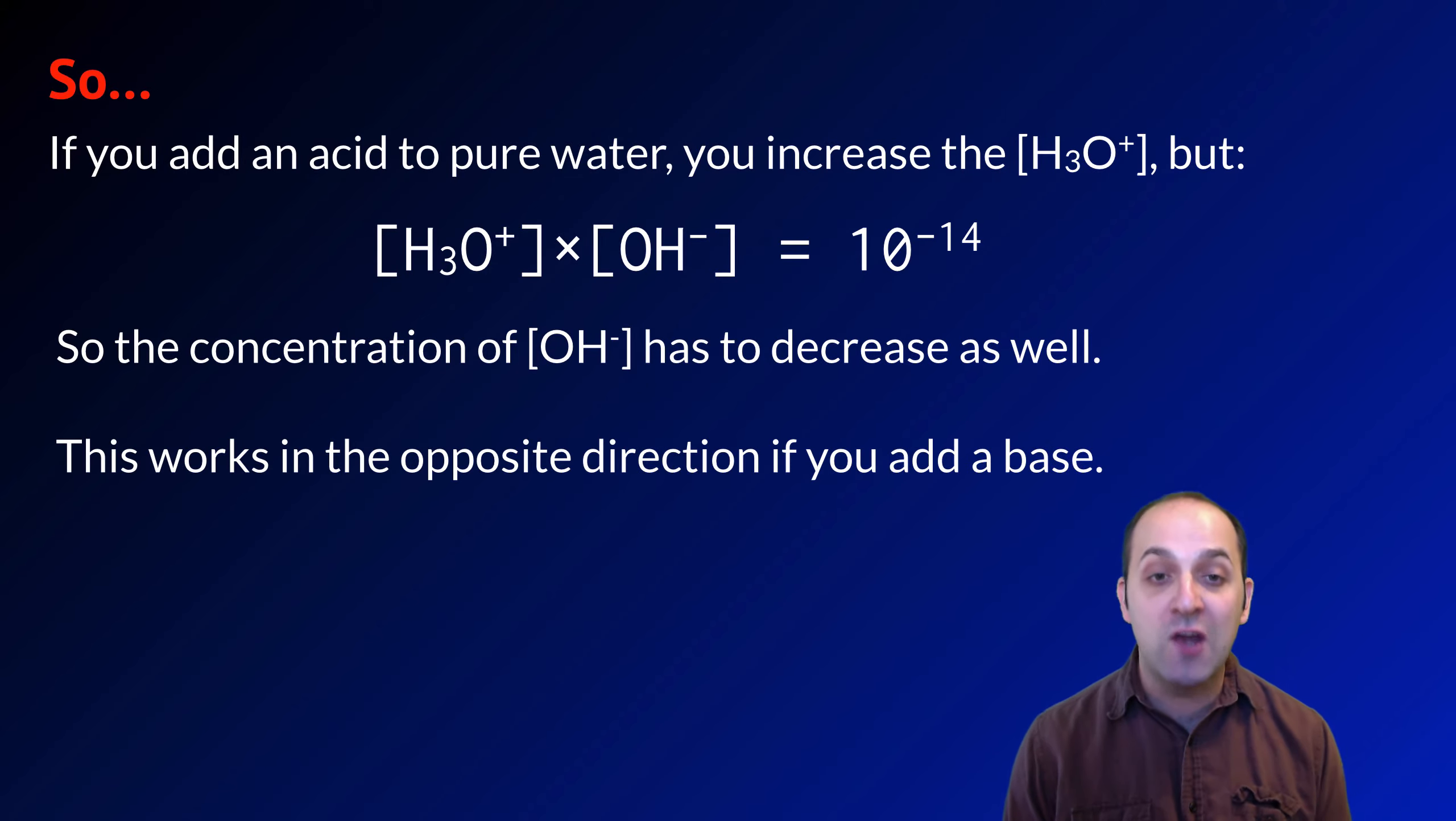This works in the opposite direction if you add a base. If you increase the concentration of hydroxide ions by adding a base, the concentration of hydronium ions has to decrease as well to maintain Kw and keep it at 10 to the negative 14.